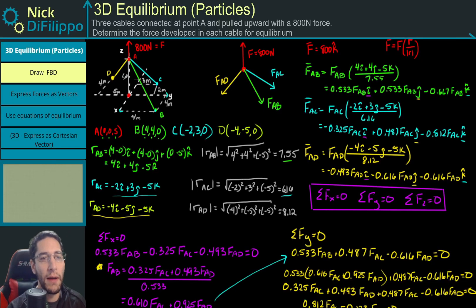In my last video we looked at this problem where at point A we are applying an 800 Newton force, and it's tethered by three different cables at AD, AB, and AC. We were trying to figure out the force in each of these cables.